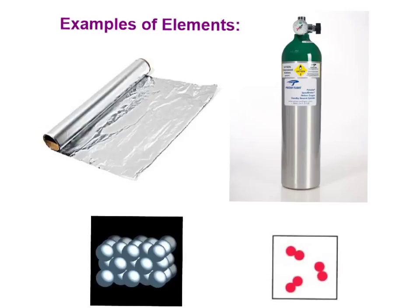There are about 90 different elements found naturally on Earth. If you look at the periodic table on the wall in your science classroom, you can see a lot of different elements. There are about 20 other elements that have been made in laboratories, but they're usually very short-lived and unstable.